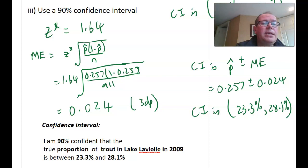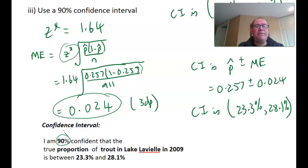Let's see if we got the same answer. This is almost identical. It's only the Z score that's changing - it's 1.64 for a 90% level. Everything else in the calculation is the same. Hopefully you got a margin of error of 2.4%, 0.024. The confidence interval is my estimate, P hat, plus or minus this margin of error. So 0.257 plus or minus 0.024 gives me a confidence interval of 23.3% to 28.1%. I am 90% confident that the true proportion of trout in Lake Lavier in 2009 is between 23.3% and 28.1%. This has the smallest margin of error of all three examples, but the least confidence.